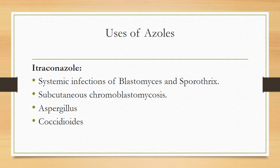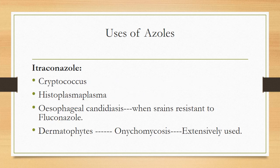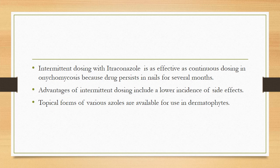Clinical uses of itraconazole: it is helpful against systemic infections of Blastomyces and Sporothrix, subcutaneous chromoblastomycosis, Aspergillus, Coccidioides, and Cryptococcus. It is the drug of choice for Histoplasma. It is also used in esophageal candidiasis when strains are resistant to fluconazole, and is effective against onychomycosis. Intermittent pulse therapy with itraconazole is as effective as continuous dosing, with a lower incidence of side effects.